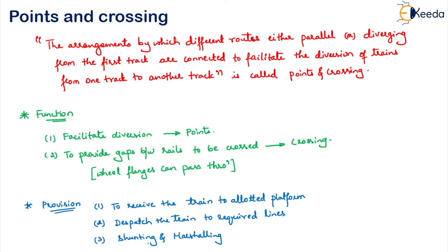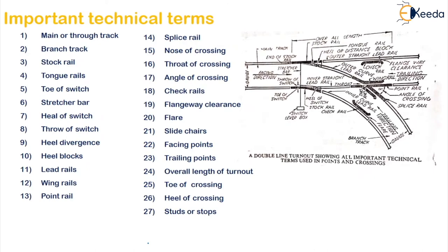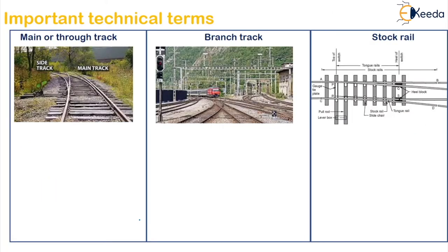Now let us get into the technical terms involved in points and crossings. There are around 27 terms, so let us see one by one what each term tells us. The first one is the main or through track — this is your main track, basically the railway track from which the train is deviated. It is called the main track.